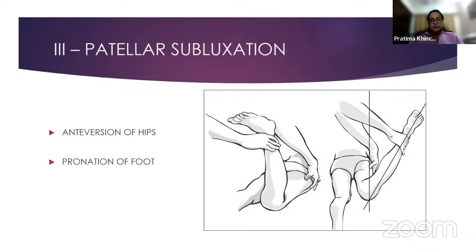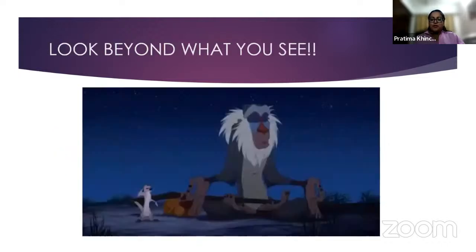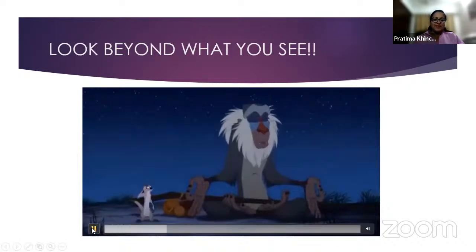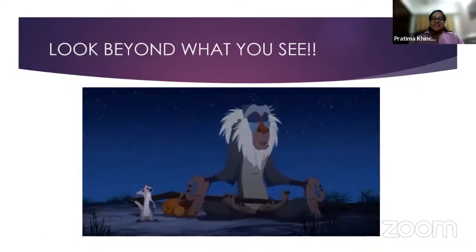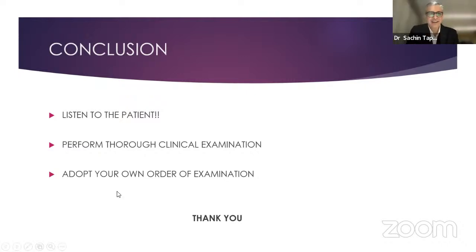For patella subluxation, you must examine not only the knee but also the hips and feet, because increased femoral anteversion is a strong independent factor for patella subluxation. A detailed examination helps decide what to do for the patient and how to proceed with any surgical correction. Other conditions around the knee include ITB syndrome, bursitis, and tendonitis. It's always good practice to examine the opposite knee, examine the hips, and in certain cases examine the spine and ankle as well. In conclusion: listen to the patient, perform a thorough clinical examination, and over time adopt your own order of examination — and you'll rarely go wrong.